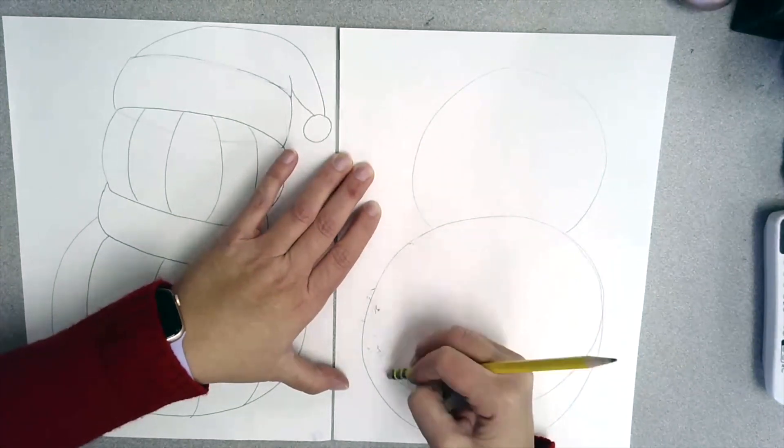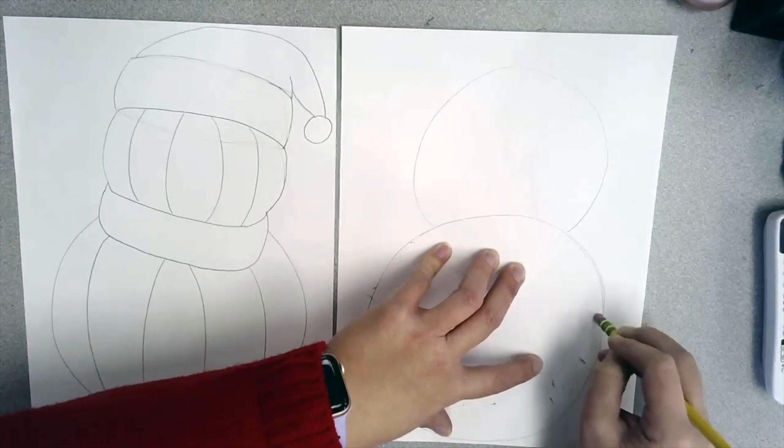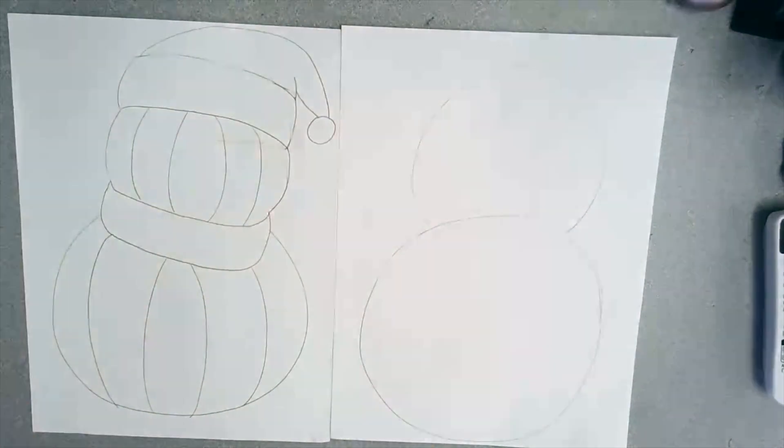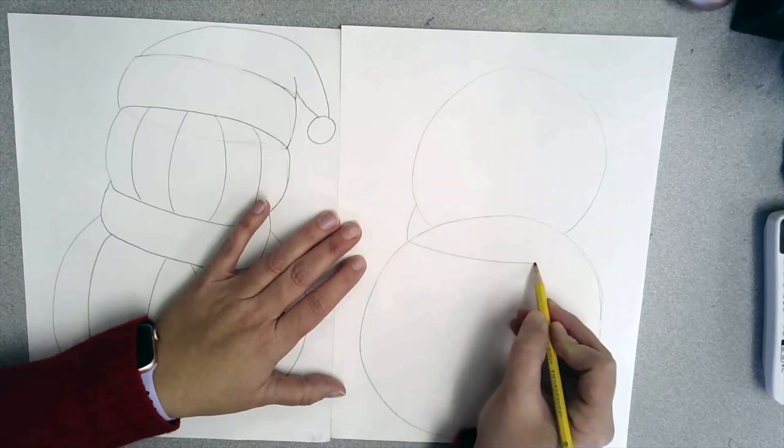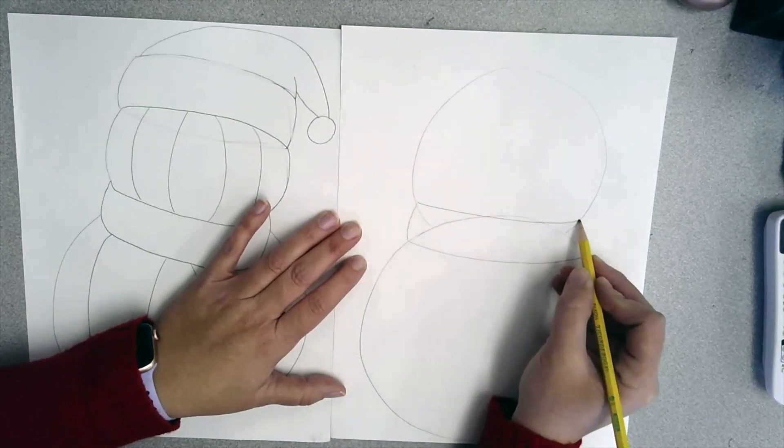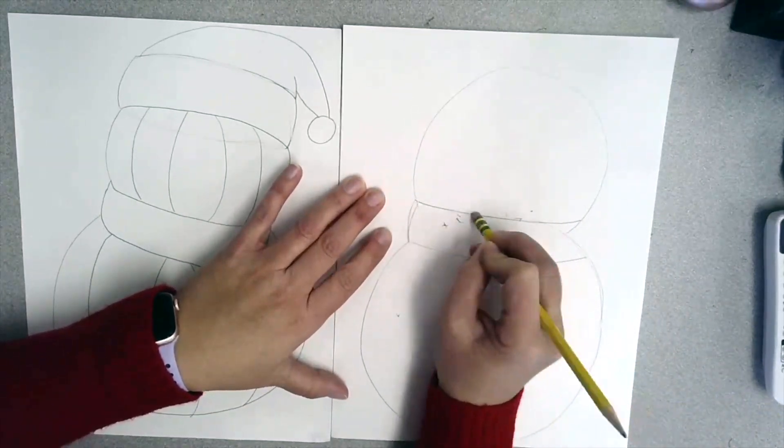If you make a mistake, draw lightly so that you can erase the mistake. It's easier to erase when you draw lightly than when you draw very hard. Next is the scarf. Make it so that it covers where the two snowballs overlap.